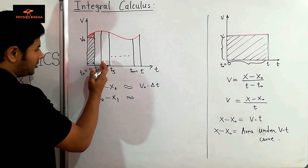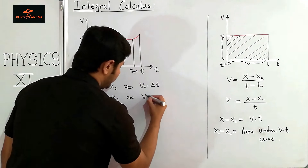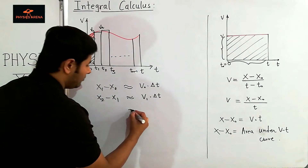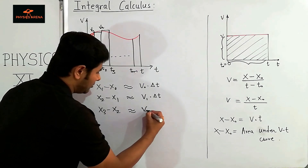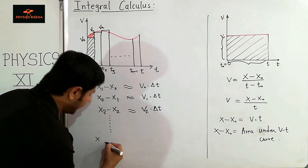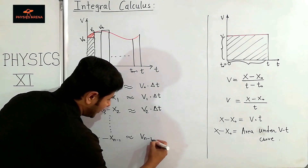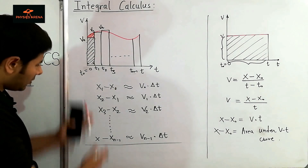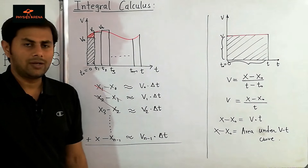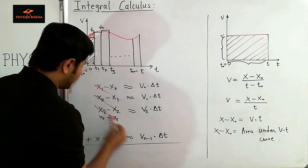So this is t₀, t₁, t₂, t₃, and so on up to tₙ, with tₙ₋₁ just before. Now I can find the change in position from t₀ to t₁, which is x₁ minus x₀, as the area under this curve here. Finding this area exactly is difficult, so we approximate it as the area of a rectangle: x₁ minus x₀ is nearly equal to v₀ times delta t. It is not exactly equal — there is some error.